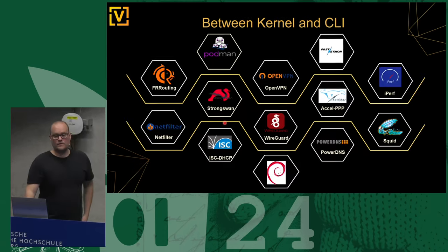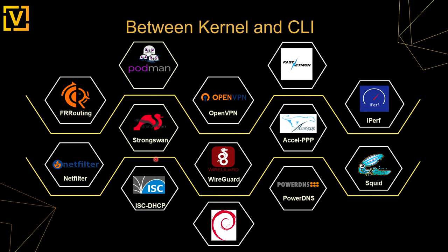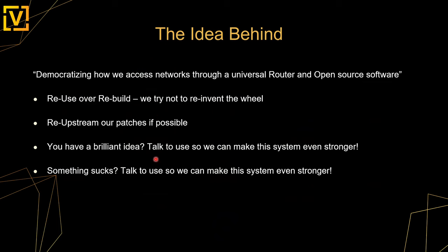Between the kernel and our CLI, we rely on many open-source products: key players include Free Range Routing for the routing engine, StrongSwan for IPsec, OpenVPN, WireGuard. Debian is our base system. We still use ISC DHCP for the LTS version, while the latest rolling version has migrated to Kea as DHCP server. We have PowerDNS Recursor as our recursive DNS server, and we also ship legacy stuff like a Squid web proxy.